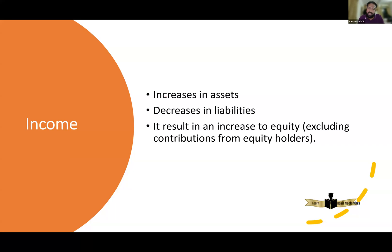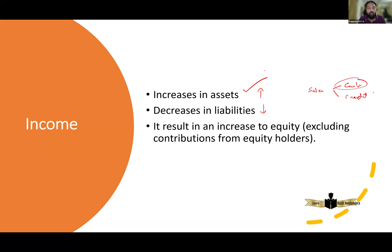Now the definition of income. Income should cause an increase in asset or a decrease in liability. An example of income is sales or revenue. Sales can be a cash sale or a credit sale. In case of a cash sale, cash comes to the organization which causes an increase in asset. Even if it is a credit sale, we debit receivable and credit revenue — and receivable is increasing. So income will cause an increase in asset or a decrease in liability.